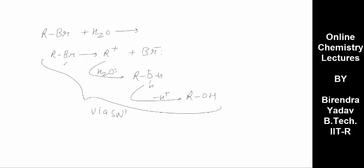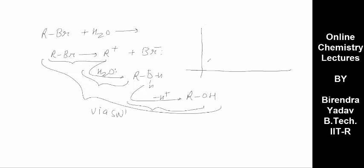How many steps? Step one, step two, step three. In normal SN1 reactions with no rearrangement, we say two steps. But in this case, even with no rearrangement, you can say there are three steps. So if there are three steps, the graph will have three transition states. The delta G versus progress of reaction graph has transition state one, transition state two, transition state three.